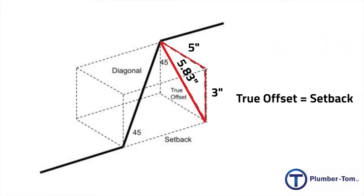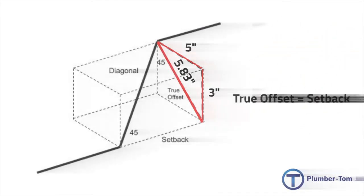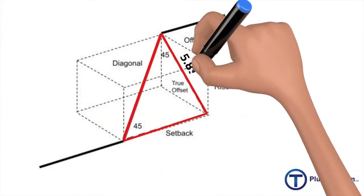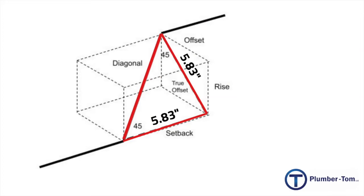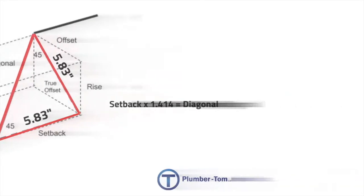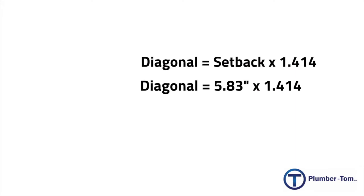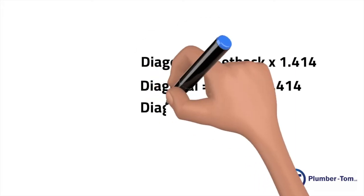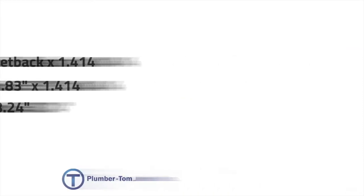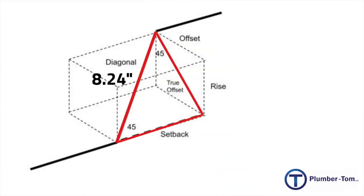So now we know that our triangle with an offset of 5 and a rise of 3 has a diagonal of 5.83. This 5.83 is the true offset, which is equal to the setback. Now we go back to working with our triangle that has two 45-degree angles and two sides that are the same. We've calculated the true offset and the setback at 5.83. To find the diagonal — which is where our pipe will run — we multiply the setback by 1.414. So that would be 5.83 × 1.414, giving us a diagonal of 8.24. We have calculated our rolling offset.